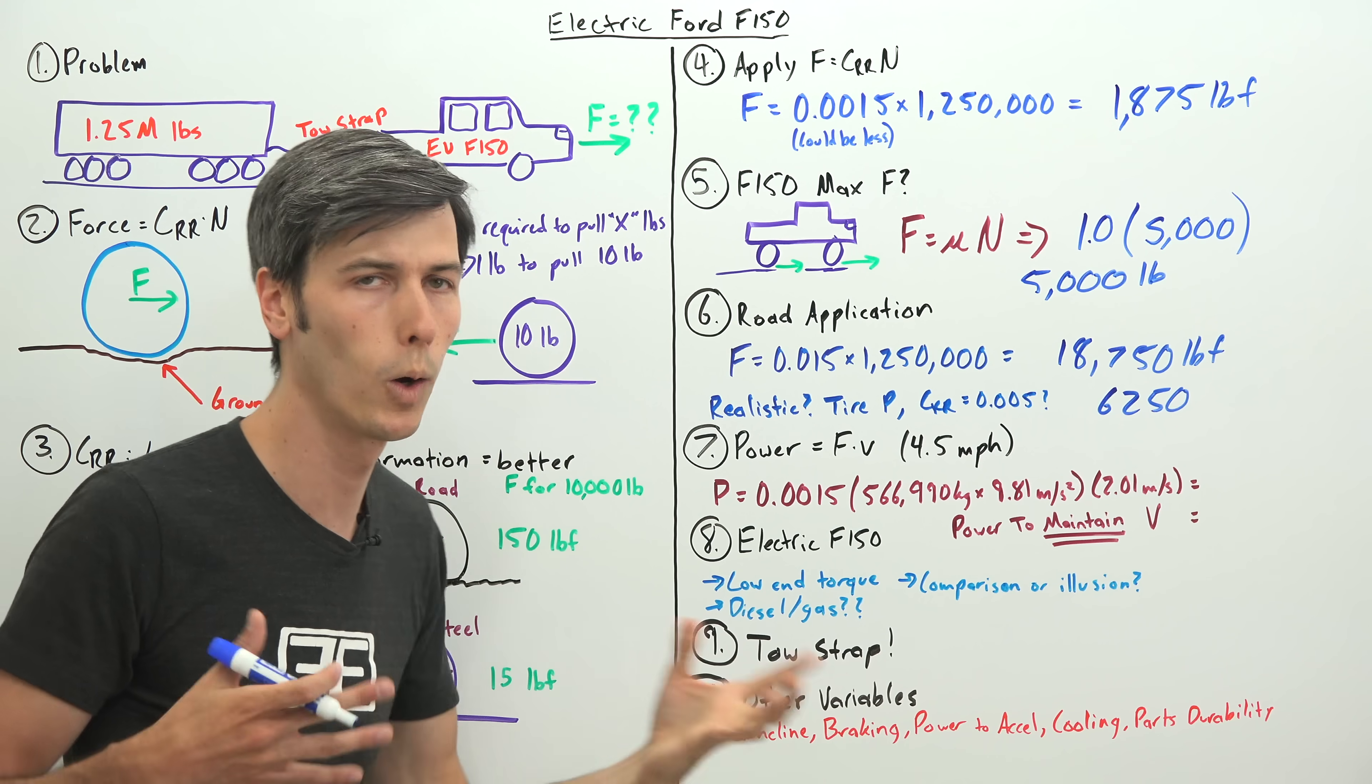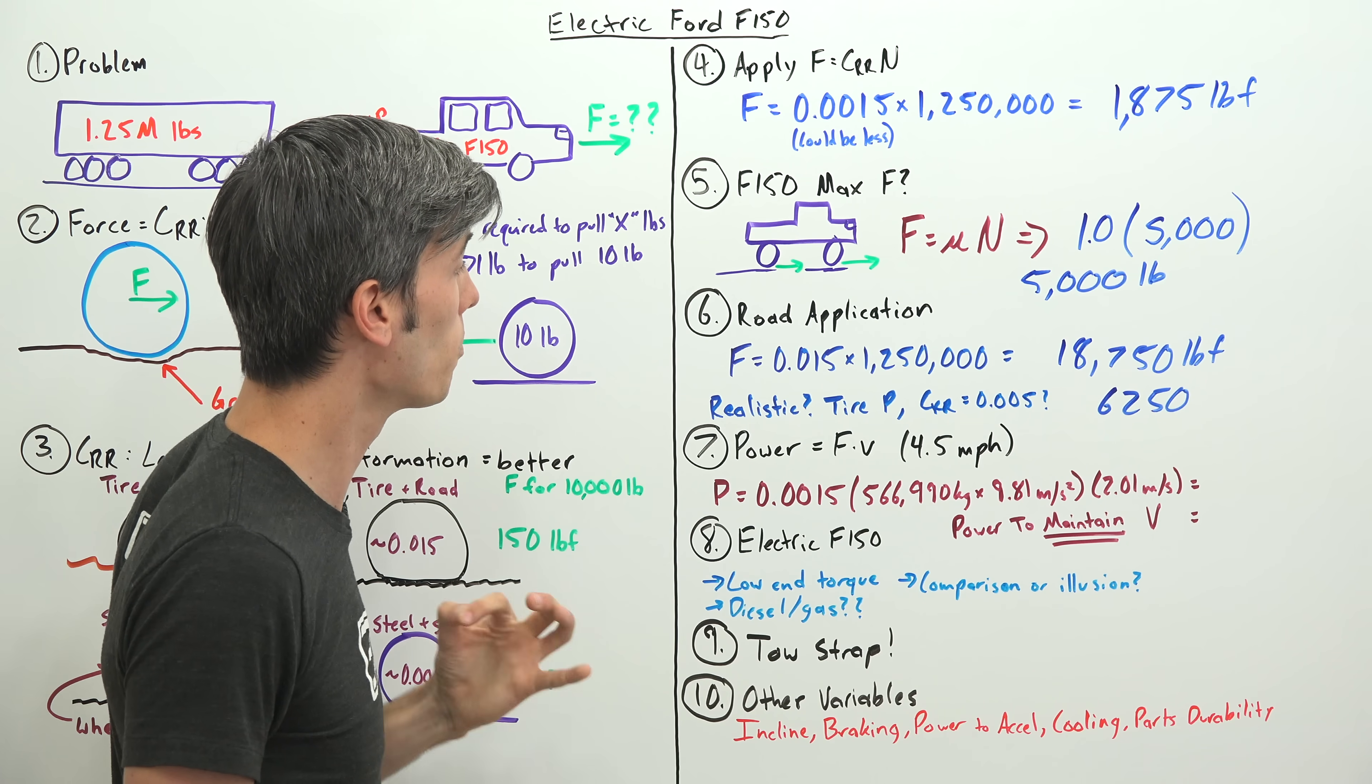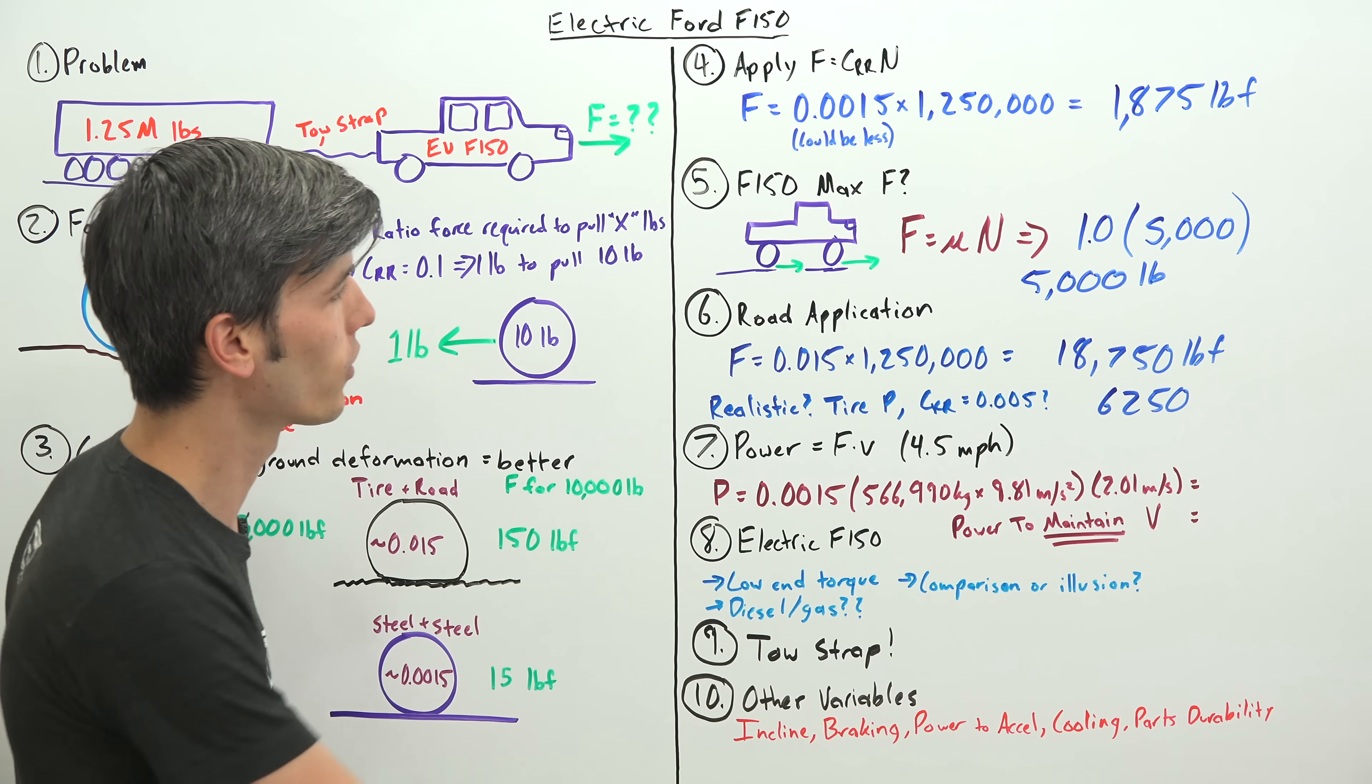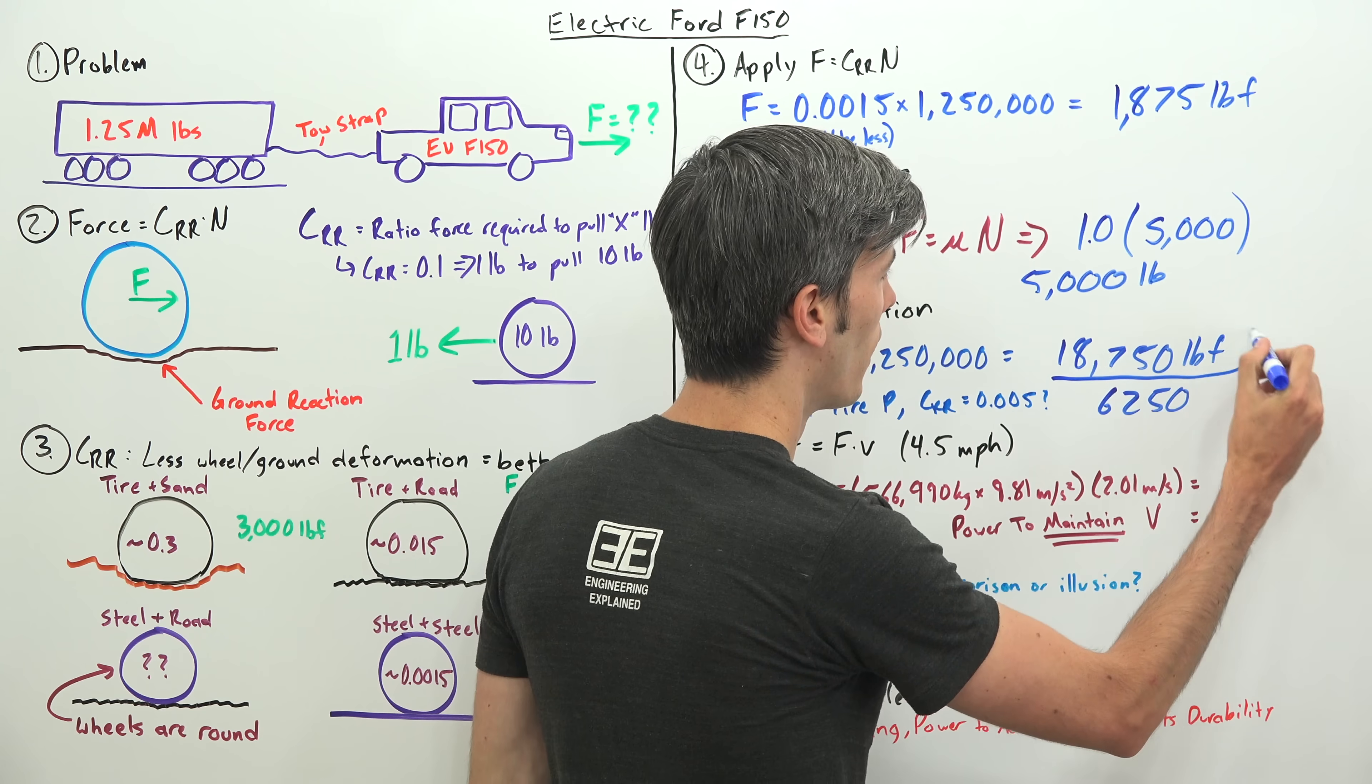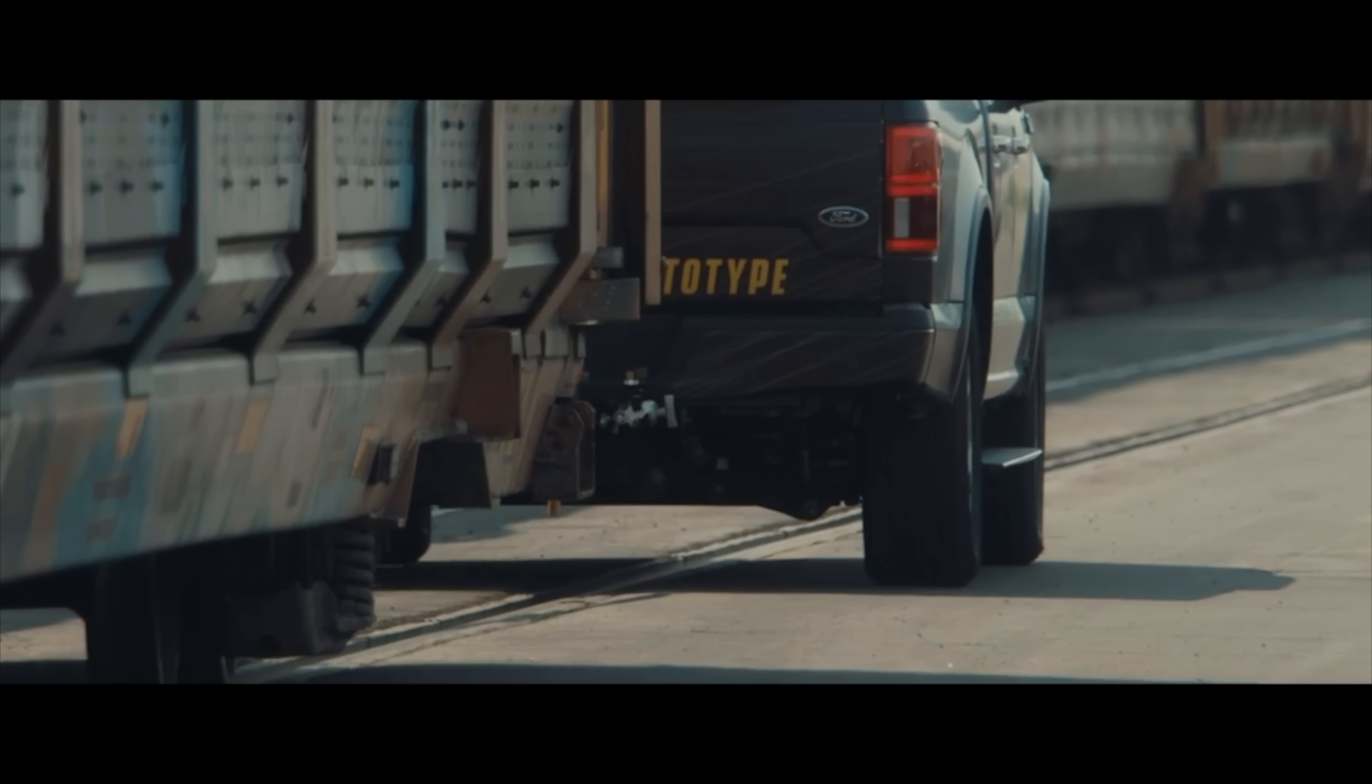You could throw some sandbags in the back, hopefully you've got enough torque, put a thousand pound payload in there, and you might be able to make it work. But the unfortunate news here is if you were to do this, realistically, this number means you could not pull that 1.25 million pounds on a road.